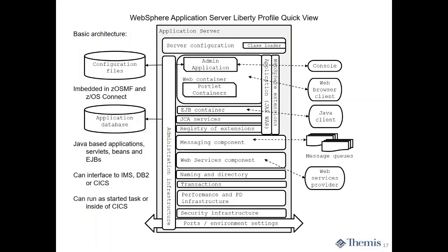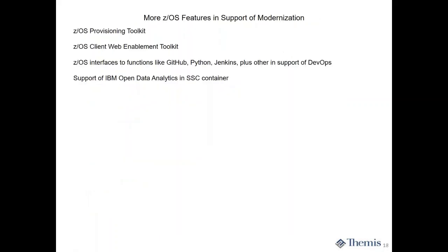So it can run inside CICS or it can run by its own started task — a complete Java application environment. ZOS Provisioning Toolkit: I can script, and IBM provides some basic scripts for essentially constructing a complete ZOS operating system. The thought process is if I want to test a special application capability, I probably don't want to modify the production operating system. I can spin up a ZOS operating system with certain features, allow people to test it out — CICS and IMS can be ingrained in there, and I think DB2 is just around the corner.